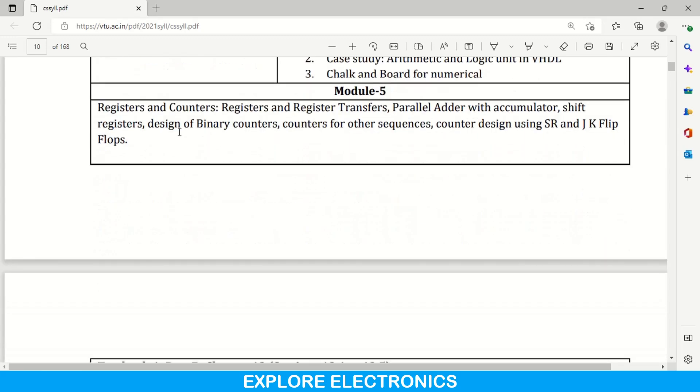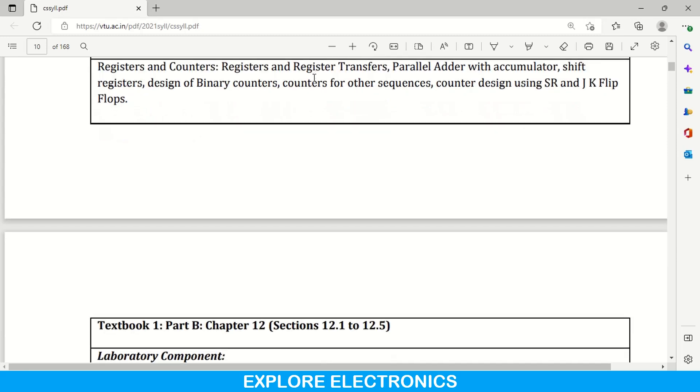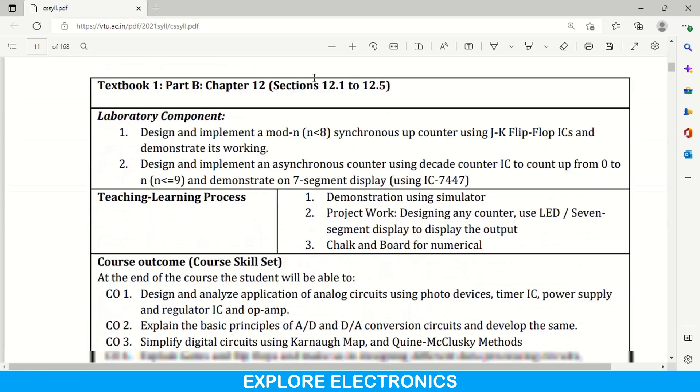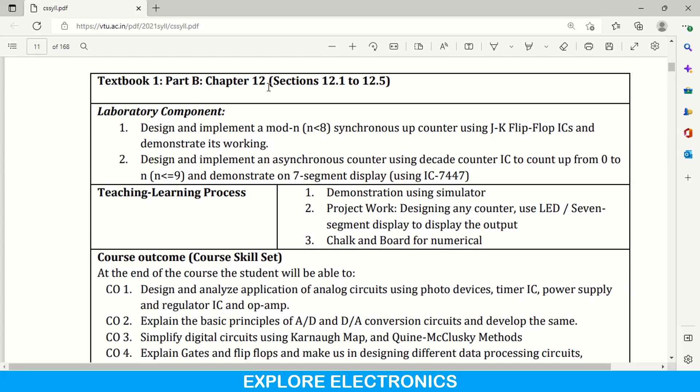Coming to fifth module, registers and counters. Here, different types of registers and register transfers, parallel adder with accumulator, shift registers are discussed. And then coming to counters, binary counter, counters for other sequences, counter design using SR and JK flip-flop. That is module 5 that covered in again the same textbook 1 in chapter 12.